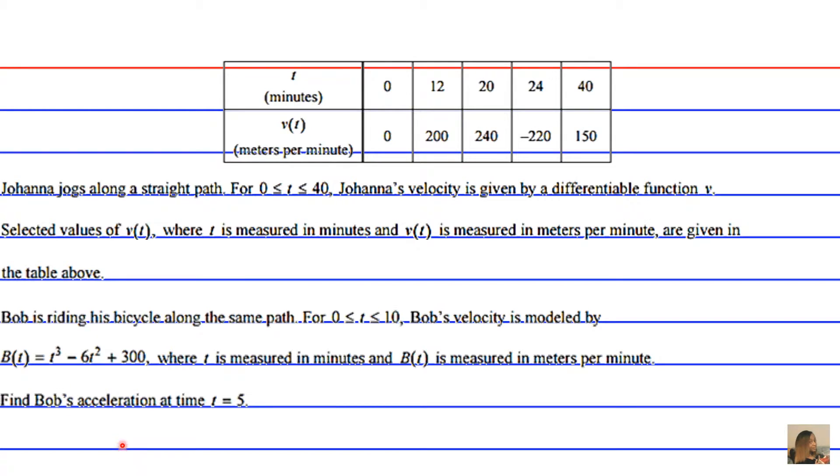Find Bob's acceleration at time t equals five. So the key here is to think about how we can figure out the acceleration given the information we have here in the model function b of t. I'll give you a moment to think.